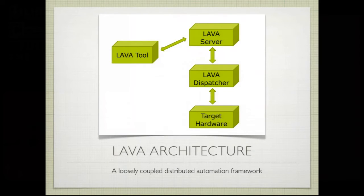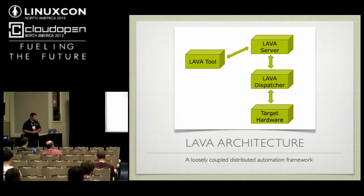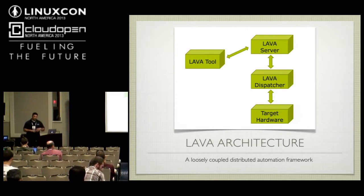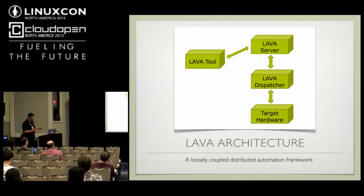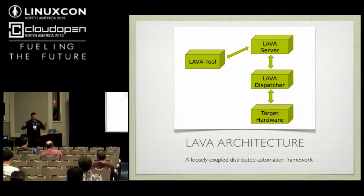The LAVA architecture at a 5,000-foot view: we have LAVA Tool, which is a command line client; the LAVA server, which is more or less the web front end; and then a dispatcher, which talks directly to the hardware. It's a loosely coupled distributed automation framework. When I say loosely coupled, I mean you can use any one of those pieces by itself or use the whole stack together — mix and match depending on what your deployment environment looks like.